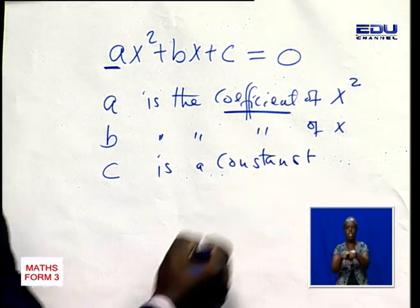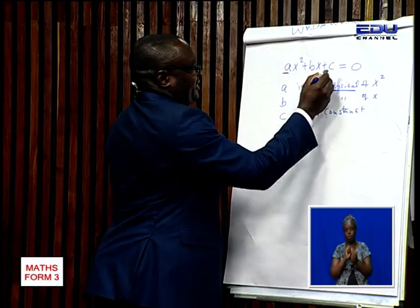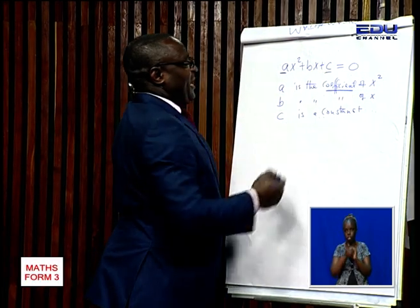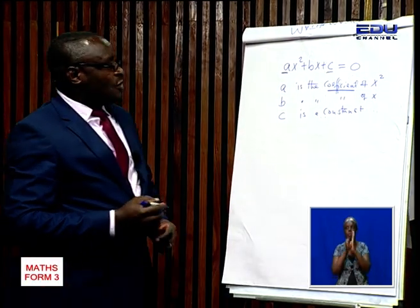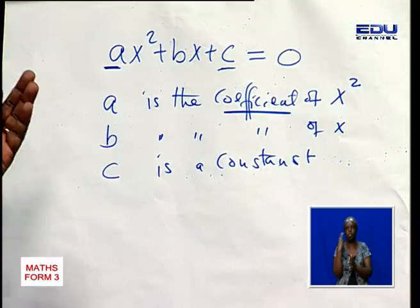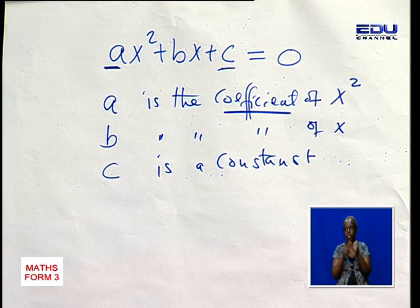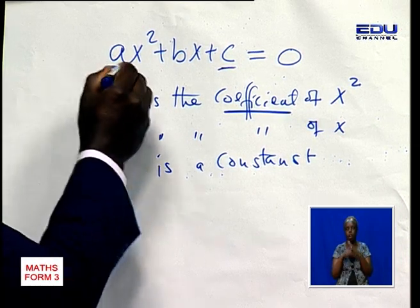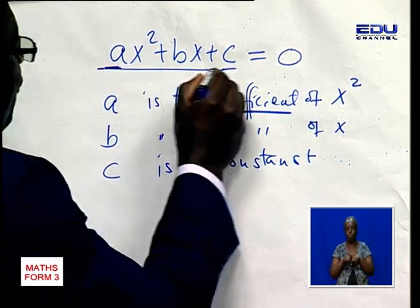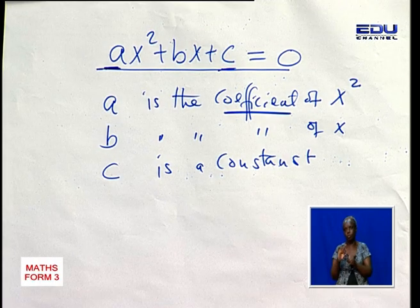A constant is simply a number that does not change. For example, numbers like 3, 2, 5, and 7 are constants. This is the general form of a quadratic equation.